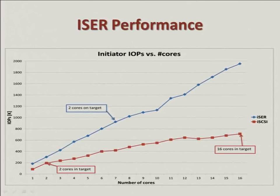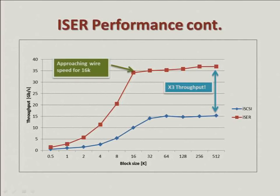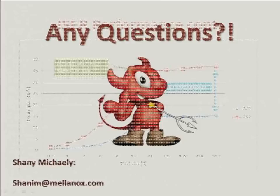A little bit of iSER performance. Looking at IO per second for the initiator with 16 connections: as we increase cores to 16, with iSER we get to 2000K IOPS, while with iSCSI we only get about 2K with just 2 cores on the target. For bandwidth: iSER can also reach line rate while increasing block size, and with iSCSI we only get about half of that.